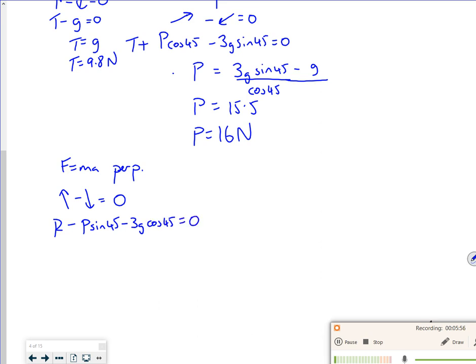But also the component of weight, which is 3g cos 45. And that's equal to zero. Now I know what my P is. So if I do a rearrange for R, it's my P, which was 16, I'm not sure, 15.5 I'm not sure, is a better value. So 15.5 sin 45 plus 3 times 9.8 cos 45, gives me an R value. All right, if it says 31.8, then let's round it to 32 newtons.